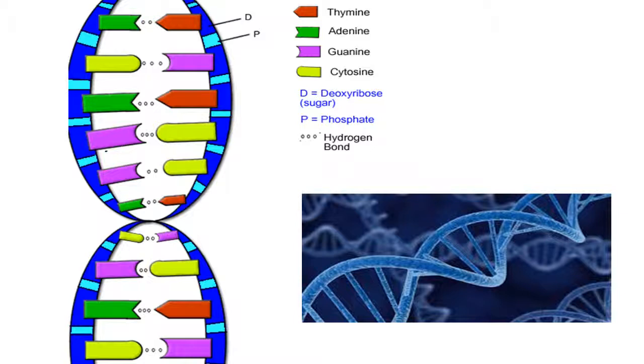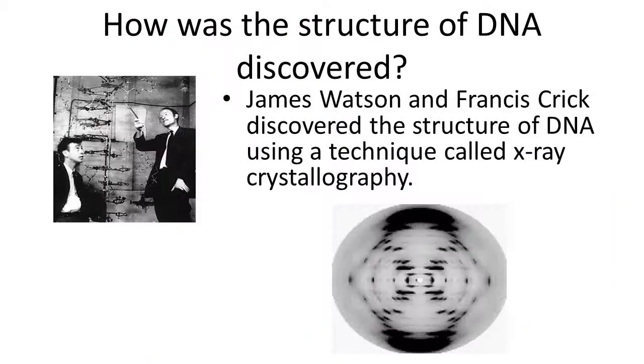And then it just curls up into this sort of ladder-like structure, this double helix they call it. It was discovered by Watson and Crick with a little bit of help from a few other people, using a method called x-ray crystallography. But you don't need to know a lot about that so don't worry.